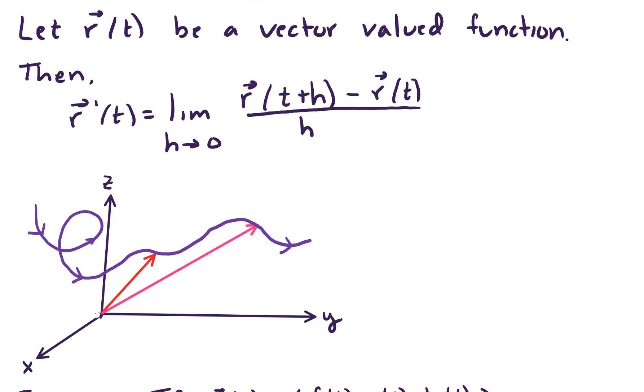So in this situation, we've got r of t is a vector-valued function. Then the derivative of r of t is equal to limit as h goes to 0 of r of t plus h minus r of t all over h. So here's the idea. Here's why this works.